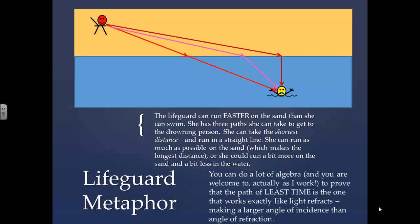You can do a lot of algebra, and you're welcome to do it actually as I work, to prove that the path of least time is the one that works exactly like light refracts, making a larger angle of incidence than angle of refraction.